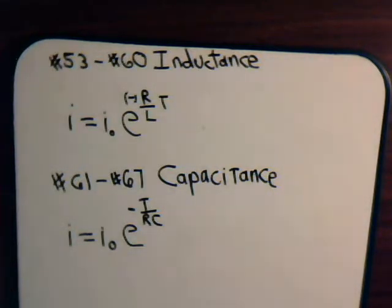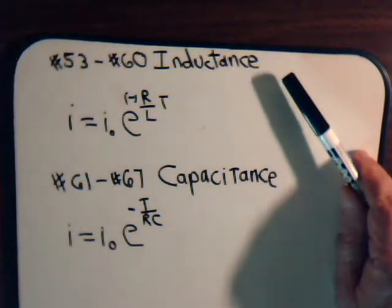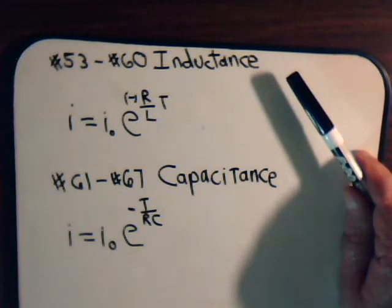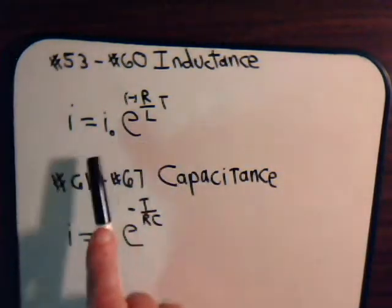In some of the past videos we had dealt with basic properties of inductance and simple inductor resistor circuits. One of the equations that we had derived was for the current associated with an inductor. And we had this equation.